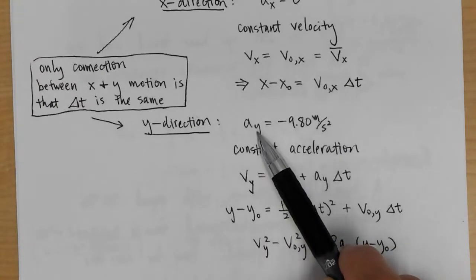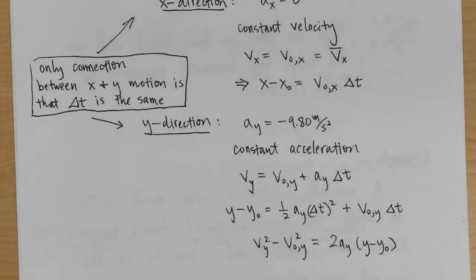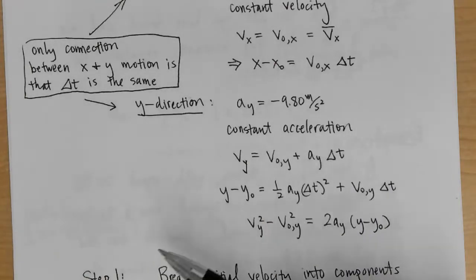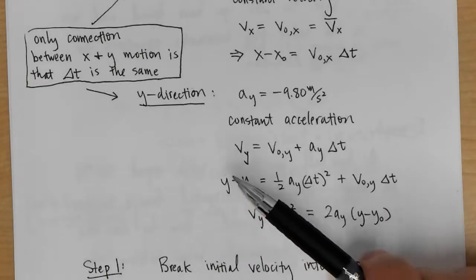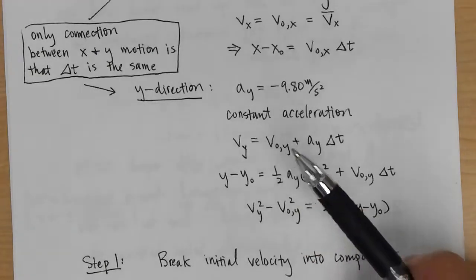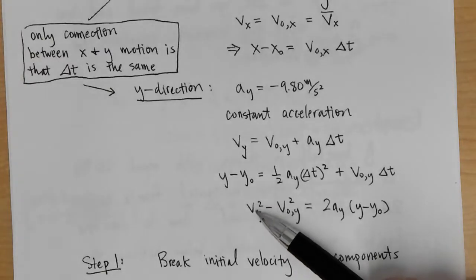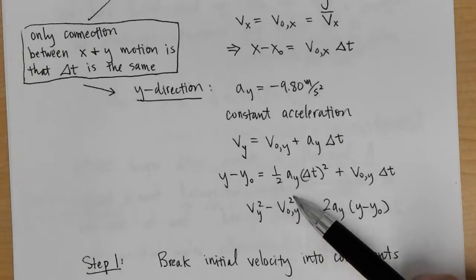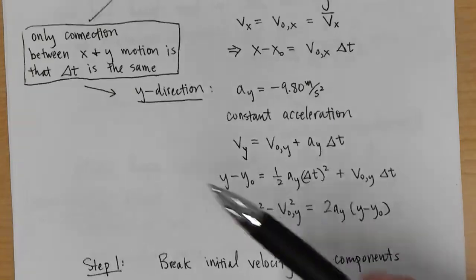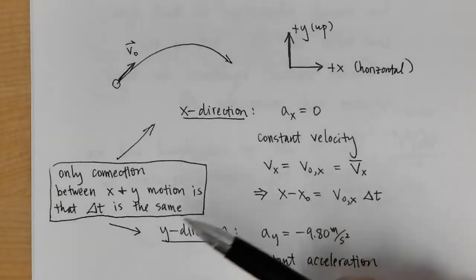For the y direction, ay is negative 9.80 m/s², so we have constant acceleration. The three useful equations are: vy = v₀y + ay·Δt; y − y₀ = ½ay·Δt² + v₀y·Δt; and vy² − v₀y² = 2ay(y − y₀). The only connection between x and y motion is that Δt is the same for both.